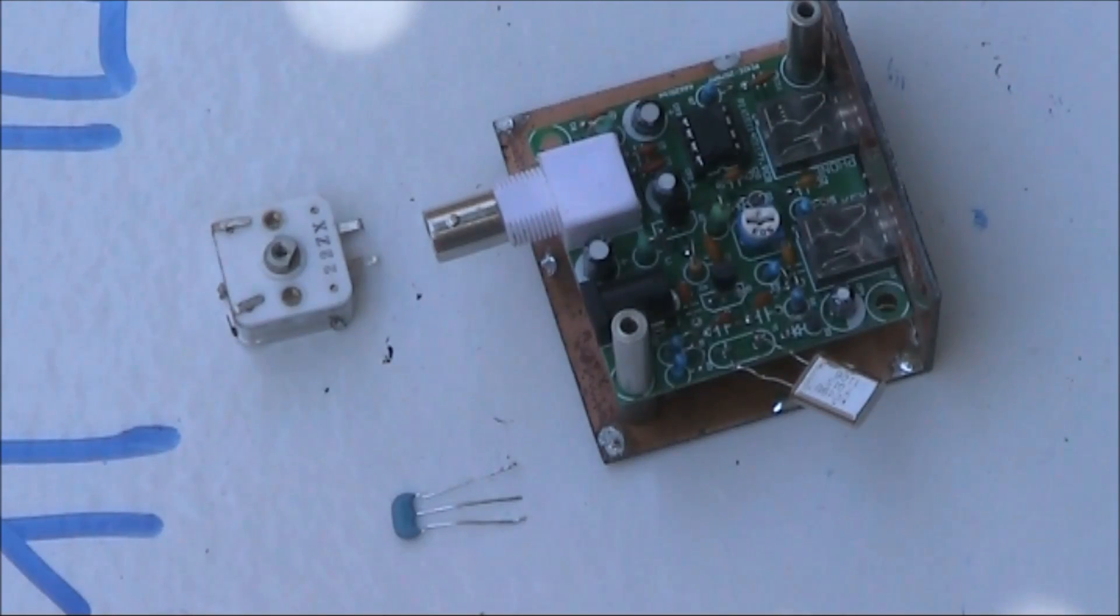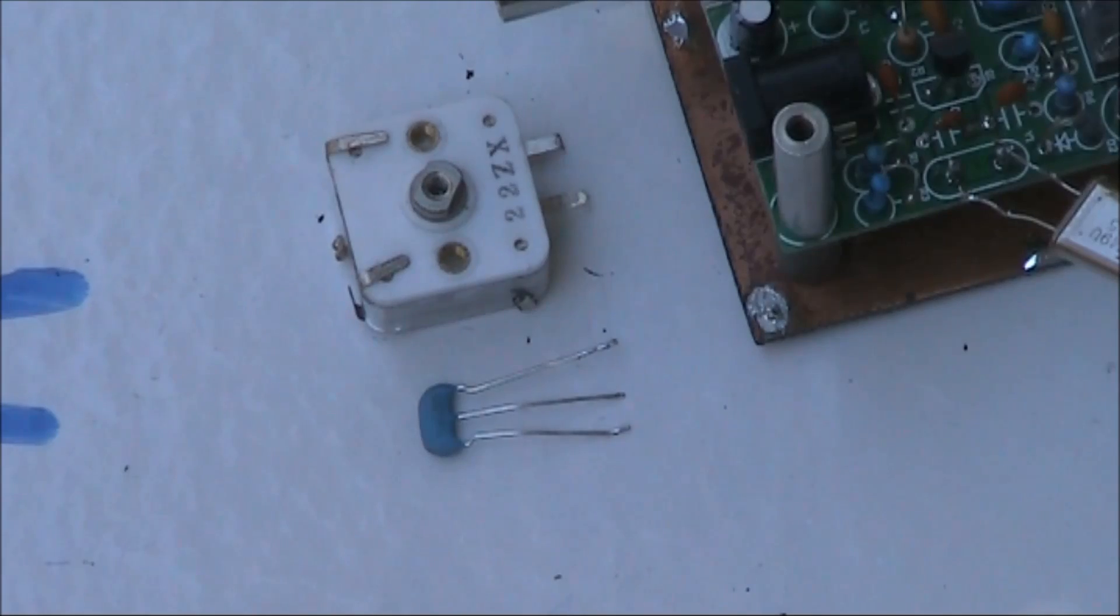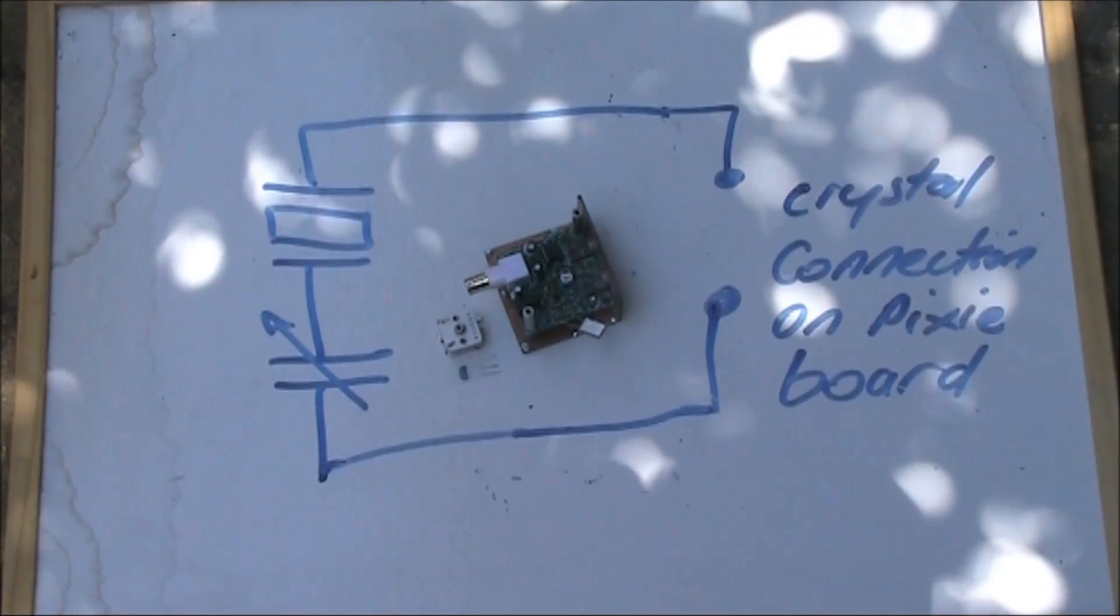Another thing you can do when you get tired of fruitlessly calling CQ with no replies is to make the thing into a receiver that covers a few more frequencies. What you see here is a ceramic resonator for 7.160 megahertz. When you wire it in series with the tuning capacitor and substitute it for the crystal, you'll be able to tune quite a range on 40 meters. Maybe not so good in North America, but for the rest of the world where you've got SSB activity around 7.1 megahertz, you'll be able to tune in and use the thing as a receiver. The circuit is the same as with the VXO, but with the ceramic resonator instead of the crystal.